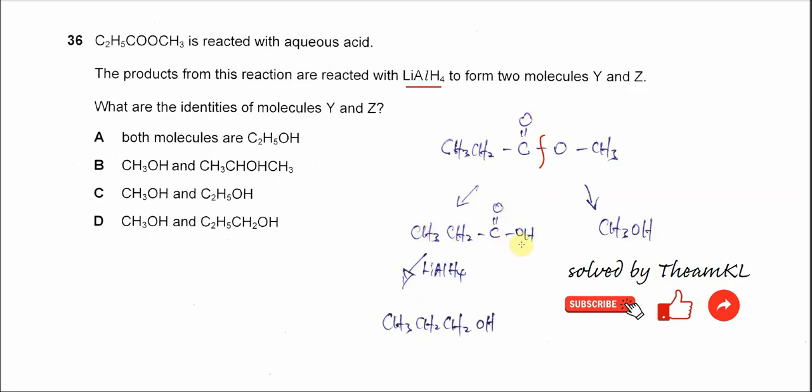And the propanoic acid is the one that can be reduced by the lithium aluminum hydride. First it will remove oxygen, after that it will add two hydrogen and it will form propanol or propane-1-ol.